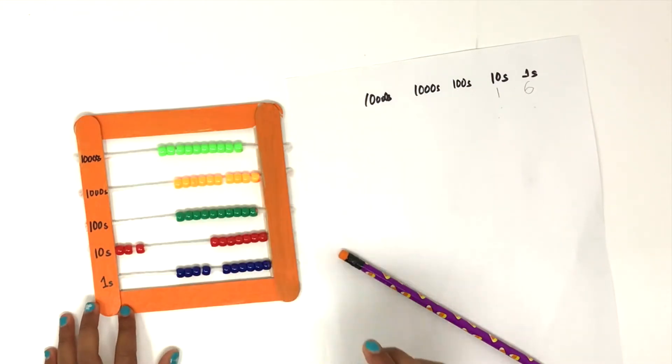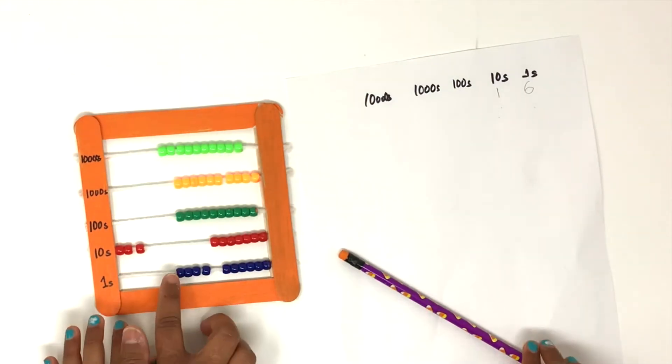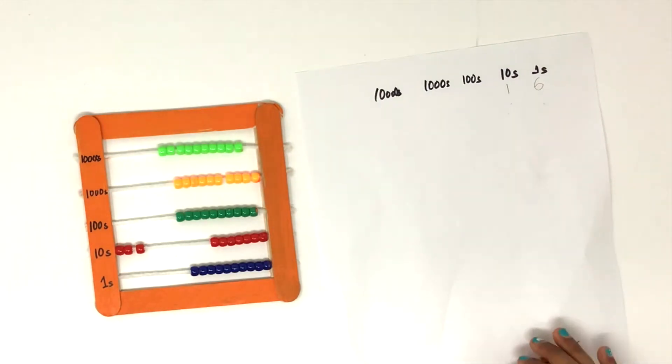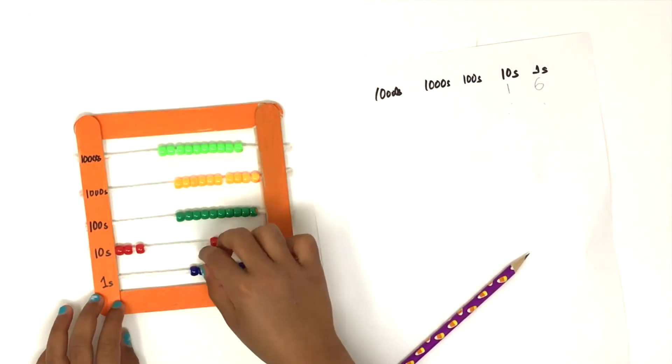There you go. So we got, out of 6 we counted only 4. So we need to count 5 and 6.